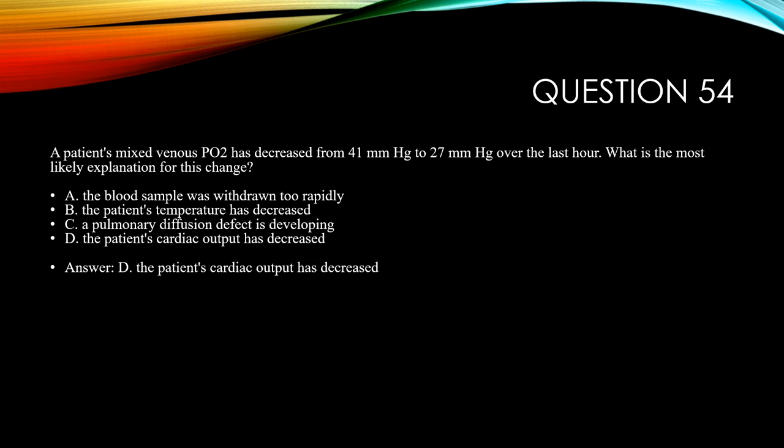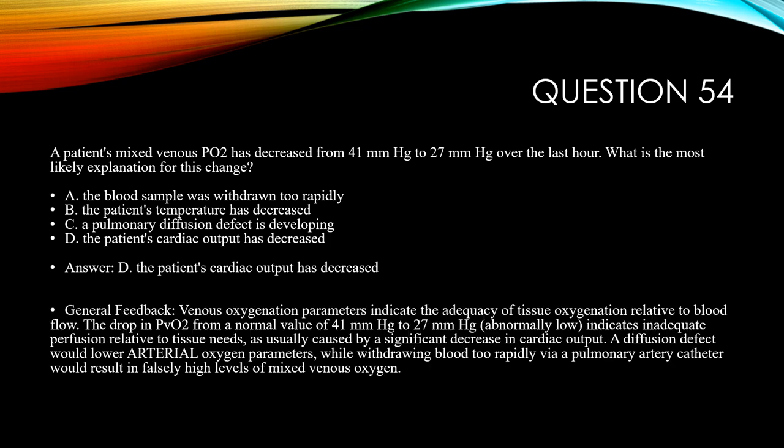The answer is D, the patient's cardiac output has decreased. Reflect on the Fick equation — looking at the difference in arterial versus venous oxygen content. As that difference widens with all else constant, cardiac output will have dropped. The drop in PvO2 from 41 to 27 mmHg indicates inadequate perfusion relative to tissue needs, usually caused by a significant decrease in cardiac output. A diffusion defect would lower arterial oxygen parameters, while withdrawing blood too rapidly would result in a falsely high mixed venous oxygen level.